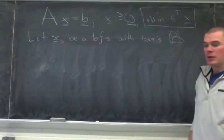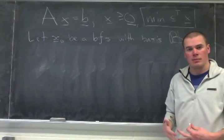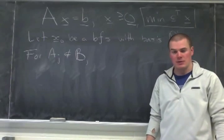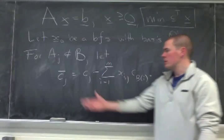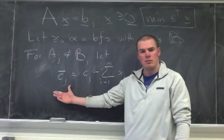What we want to do is compute the relative cost for the jth column. So for a column aj, which is not in the basis, we now want to compute a number. So our number is going to be cj bar. It's going to be called the relative cost for the column j.